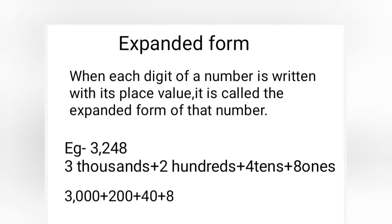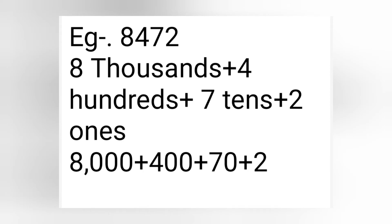Example: 3248. What is the place value of 8? Eight ones. What is the place value of 4? Four tens. What is the place value of 2? Two hundreds. What is the place value of 3? Three thousands. So 3248 equals 3000 plus 200 plus 40 plus 8. Let us look at one more example: 8472. That is eight thousands plus four hundreds plus seven tens plus two ones, which equals 8000 plus 400 plus 70 plus 2. That is the expanded form of the given number.